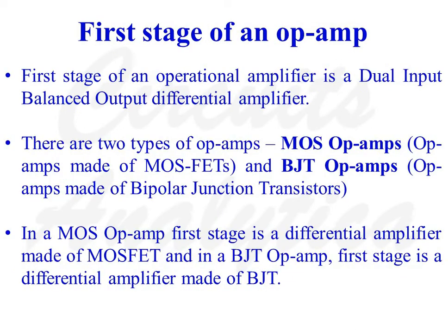We know that the first stage of an operational amplifier is a dual input balanced output differential amplifier. There are two types of operational amplifiers: MOS op-amps, where MOSFETs are used for construction, and BJT op-amps, where the first stage is a differential amplifier made of bipolar junction transistors.